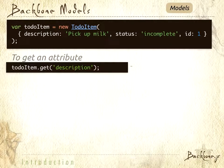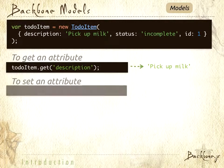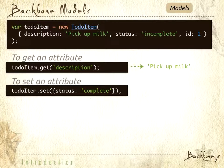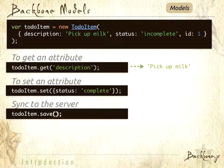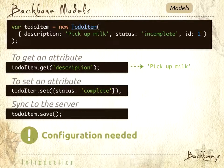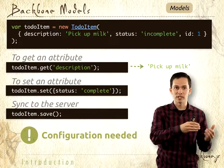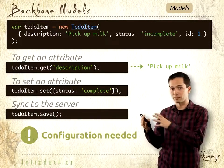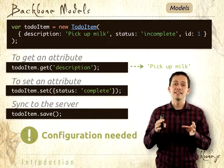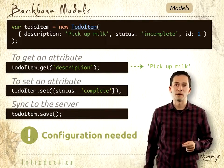We can call a get function to get data out of our model. To set an attribute, we call the set method and send in a JSON object. To synchronize the data we have client-side with the server, we can call the save function. Obviously, we'll need some configuration to make this happen, because we don't know what the endpoint on the server is for this data. We're not going to get into that this level — that'll be next level when we talk more about models.